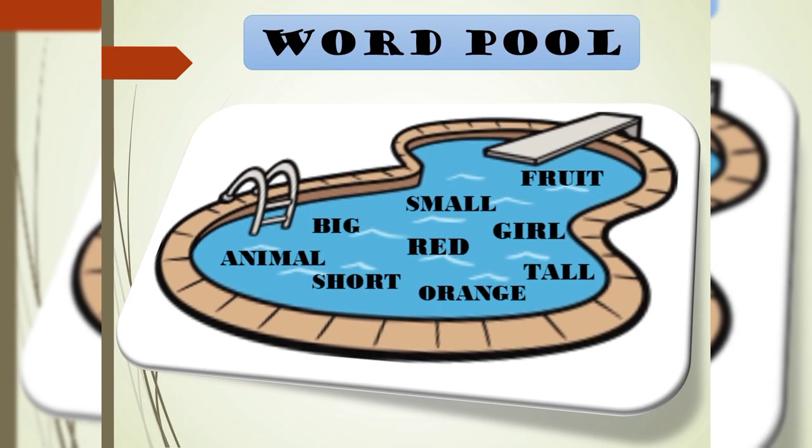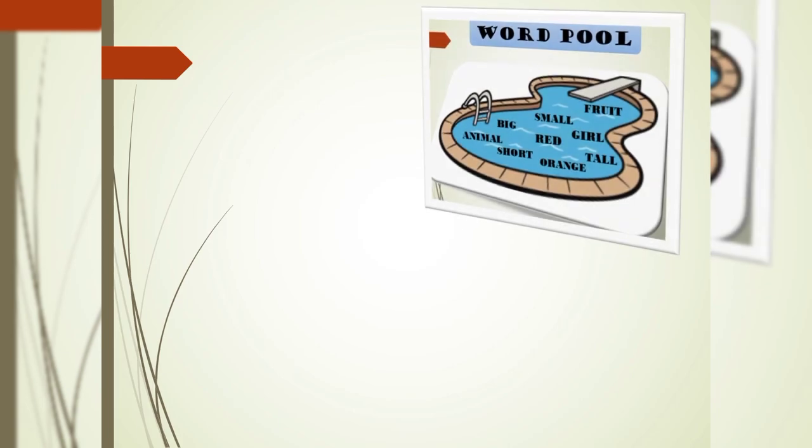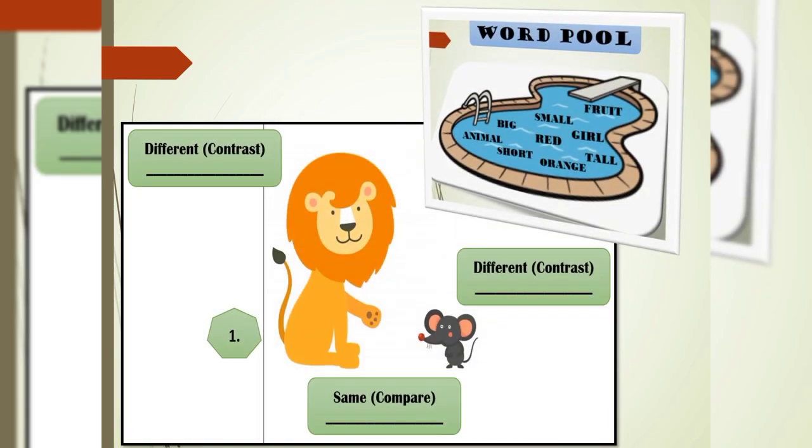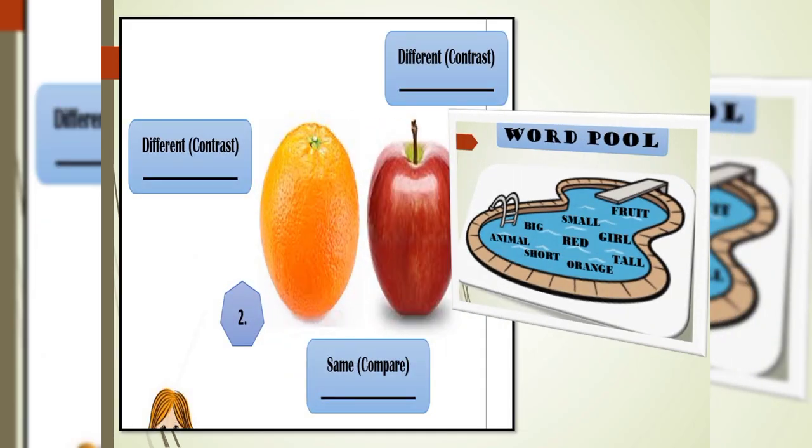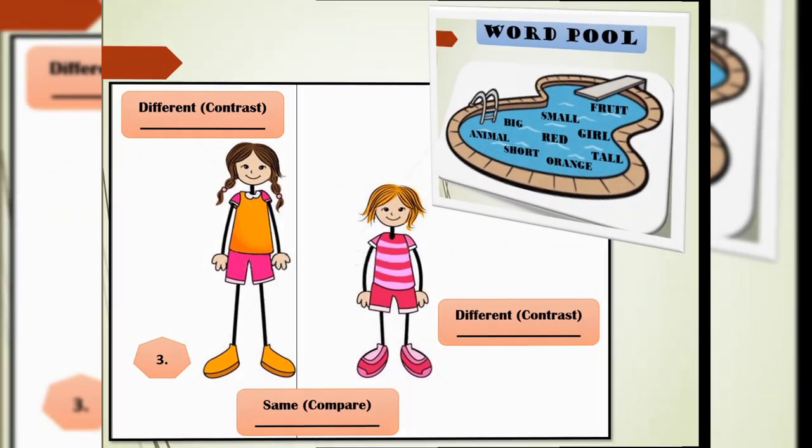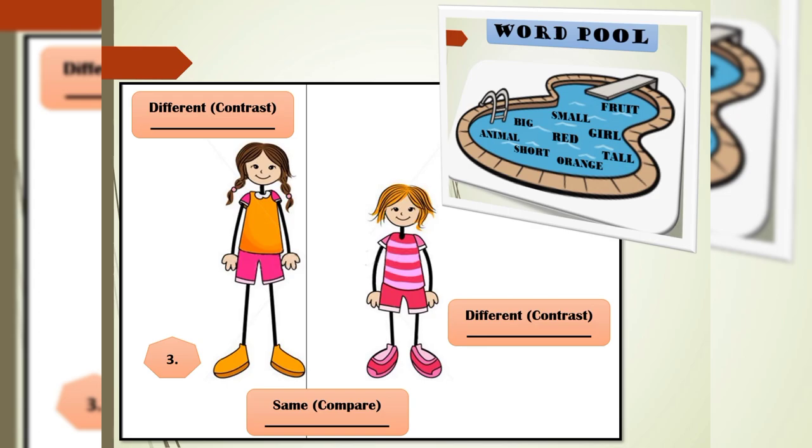This is the word pool. It contains the words Fruit, Tall, Big, Small, Animal, Red, Girl, Short, and Orange. Let's begin with picture number 1. Next is picture number 2. And last, picture number 3.